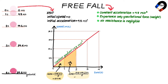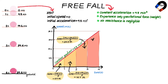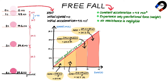Distance moved between two and three seconds equals the sum of 19.6 and 29.4, multiplied by 1 then divided by 2, equal to 24.5 meters. Distance moved between three and four seconds equals the sum of 29.4 and 39.2, multiplied by 1 then divided by 2, equal to 34.3 meters. The distance moved by the ball increases by the same amount of 9.8 meters every second.